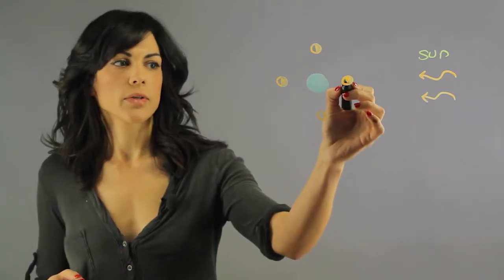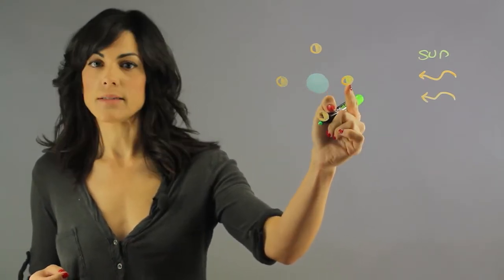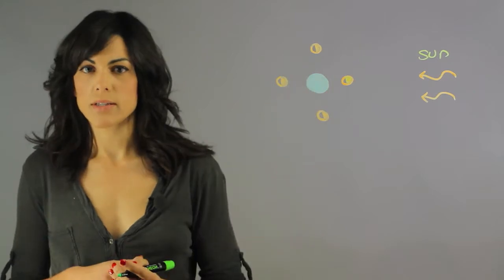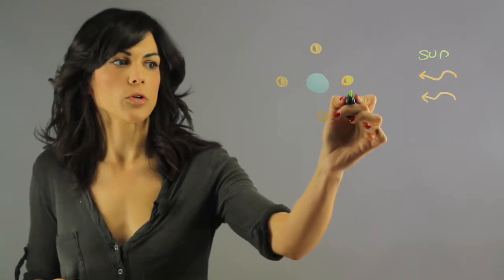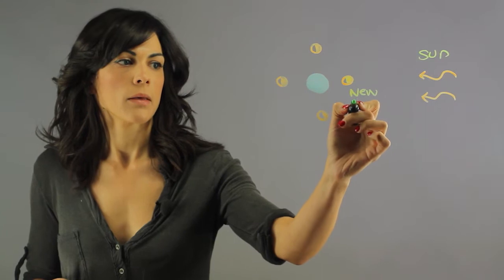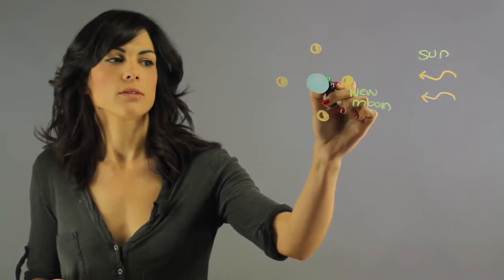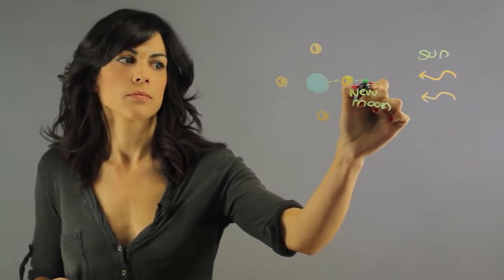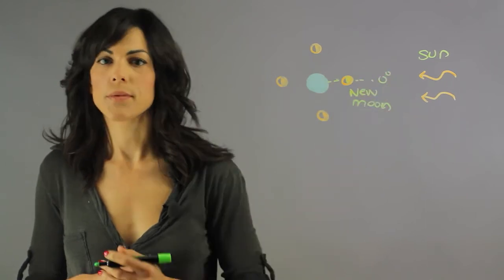So over here as you can see this side is the side that's lit and we're seeing the dark side, right? So this is new moon. Let's call this zero degrees.